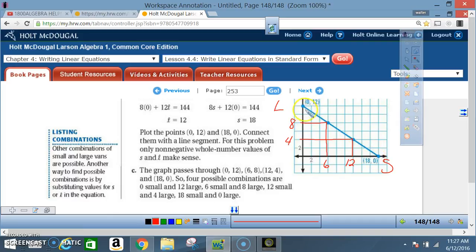Now let's analyze what we're looking at. Here we're saying that we have 0 small, 12 large. The x is 0 and 12 is large. Here we're saying we have 6 small, 8 large. Here we're saying we got 12 small, 4 large. And here we're saying we have 18 small and 0 large.